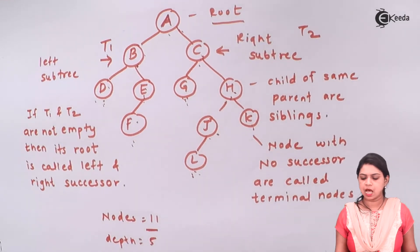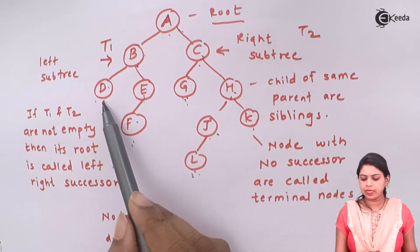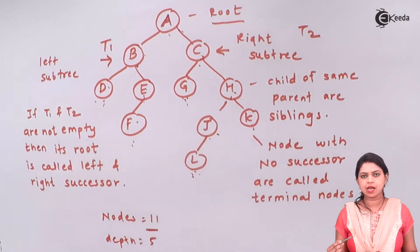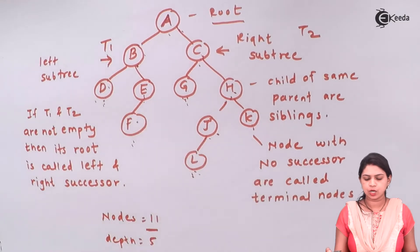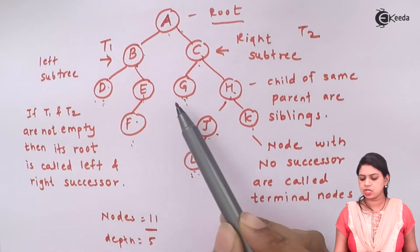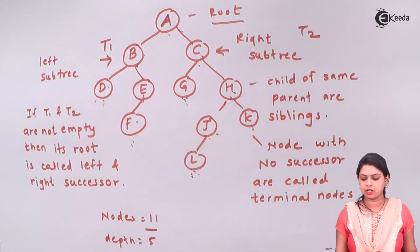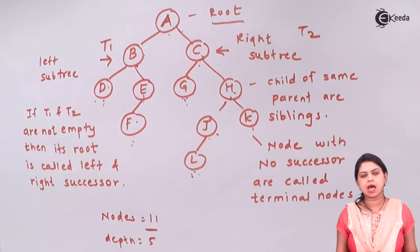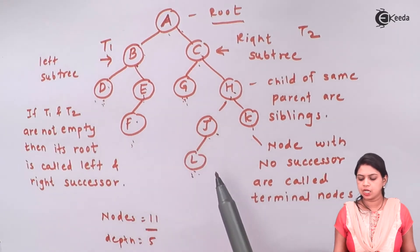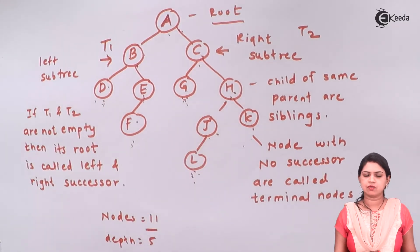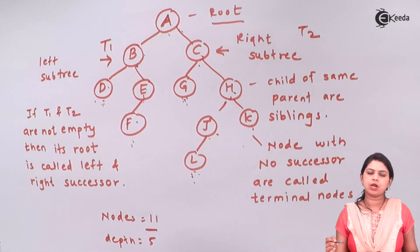Children of the same parent are called siblings. So D and E are siblings because they are children of parent B, and G and H are siblings because they are children of parent C. Nodes with no successor are called terminal nodes. Here D, F, G, L, and K have no successor, so they are called terminal nodes or leaf nodes.